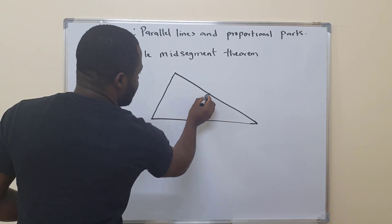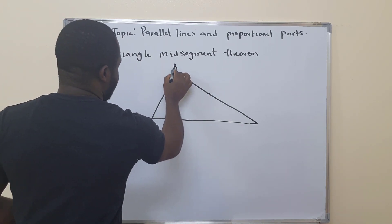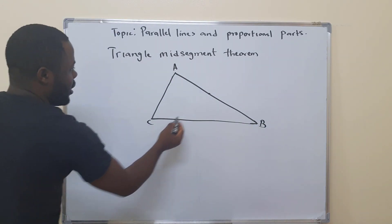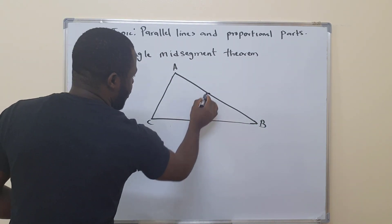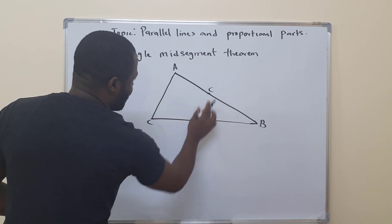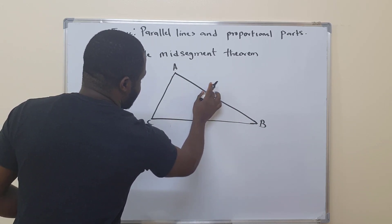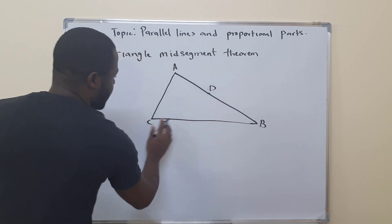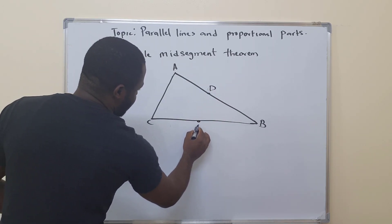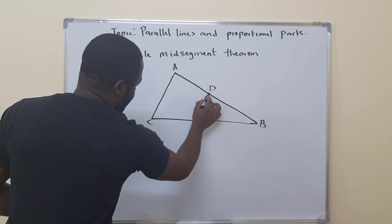So if this is the midpoint, let's say this is triangle A, B, and C. Then this is the midpoint of this line segment, you can call it D. And this is the midpoint of this segment, you can call it E. So we join it.